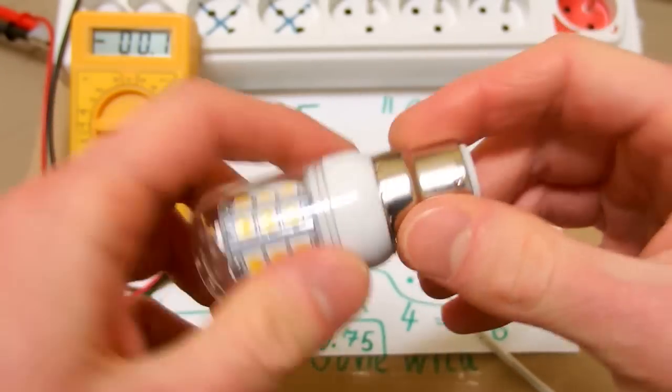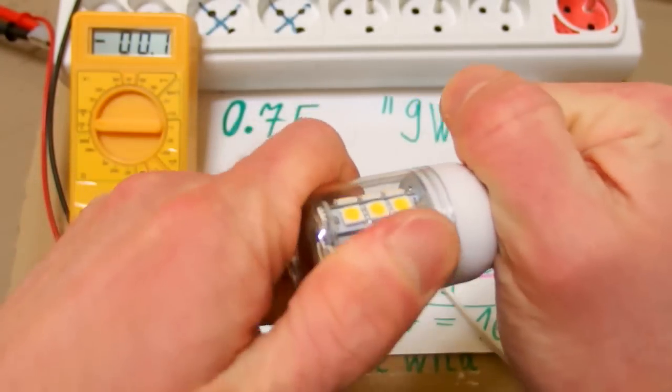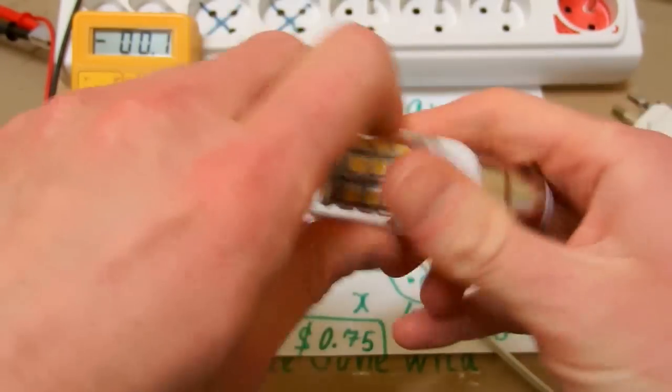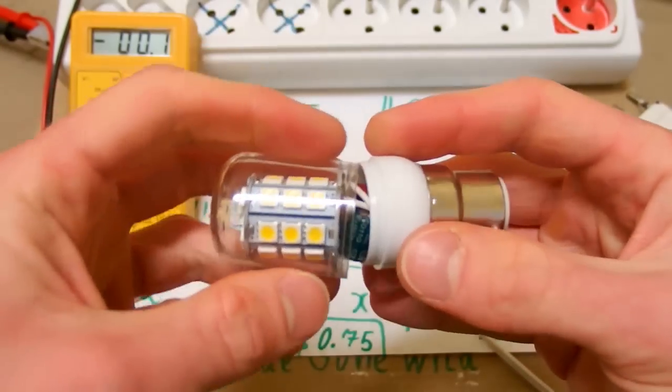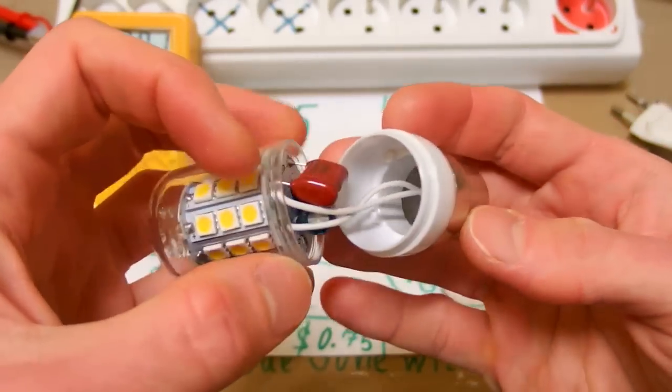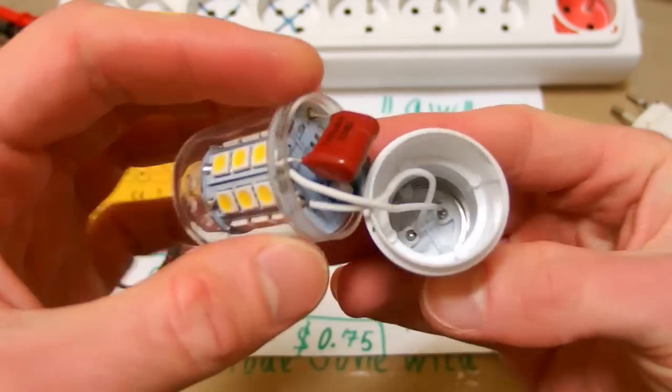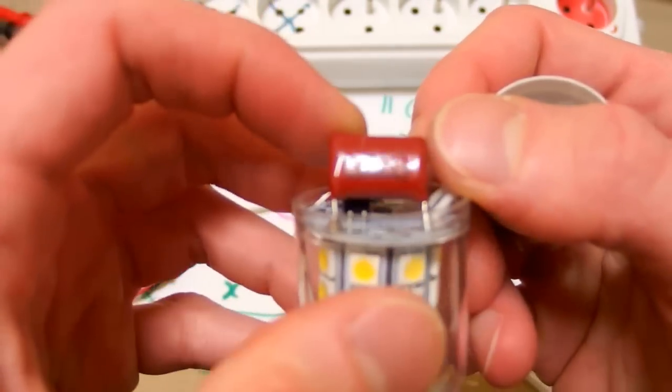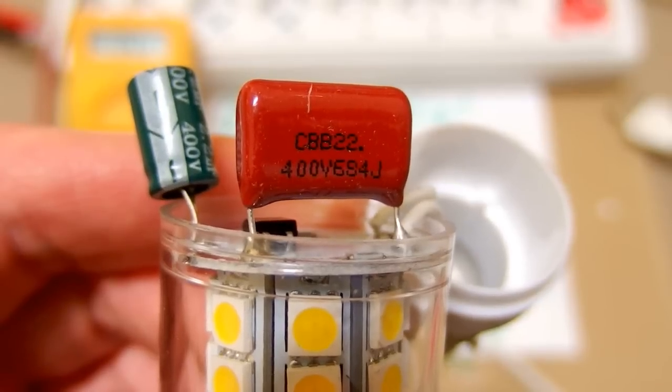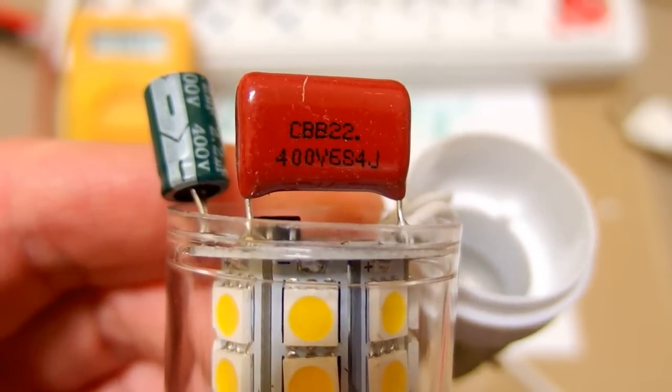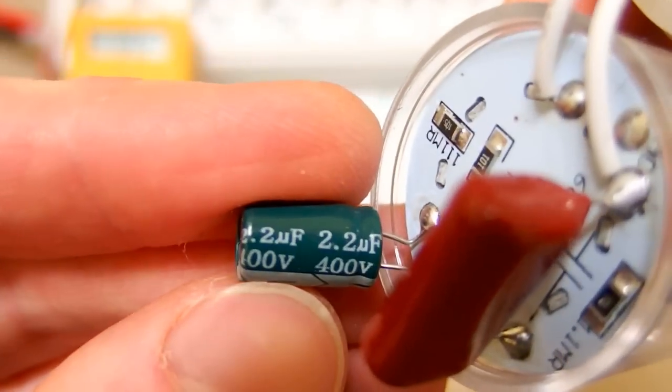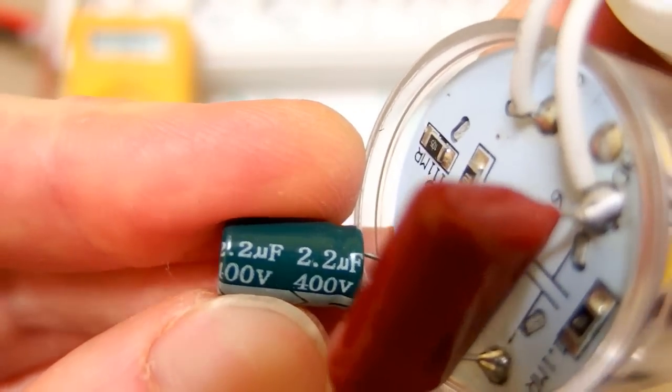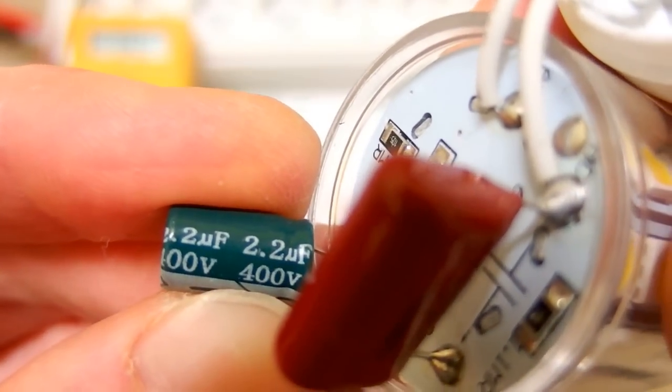So let's open it up. It was easy and there is a capacitor. It looks like a capacitive dropper. This one is 680 nanofarads rated 400 volts and this one is 2.2 microfarads and also rated 400 volts.